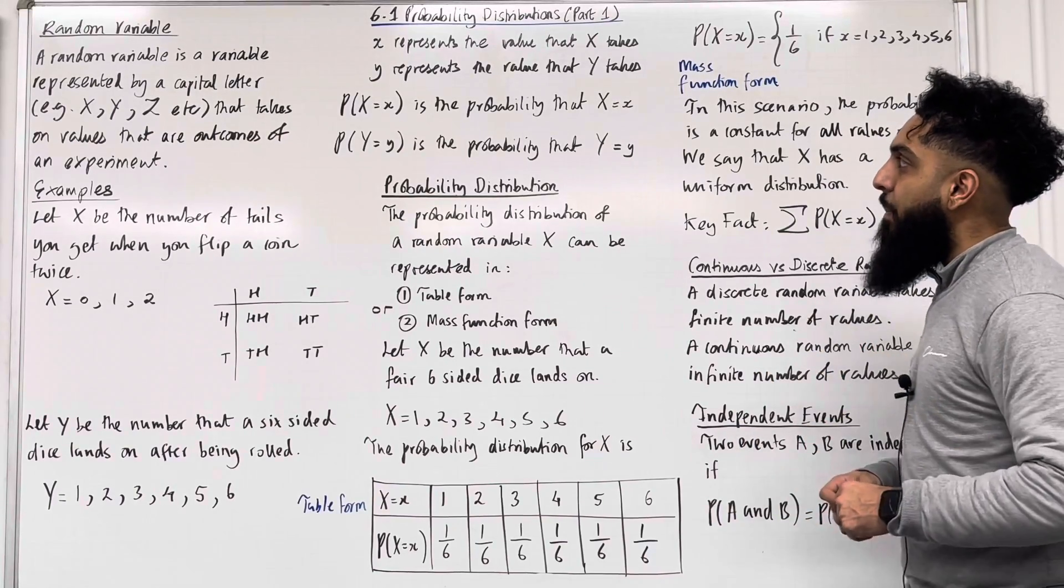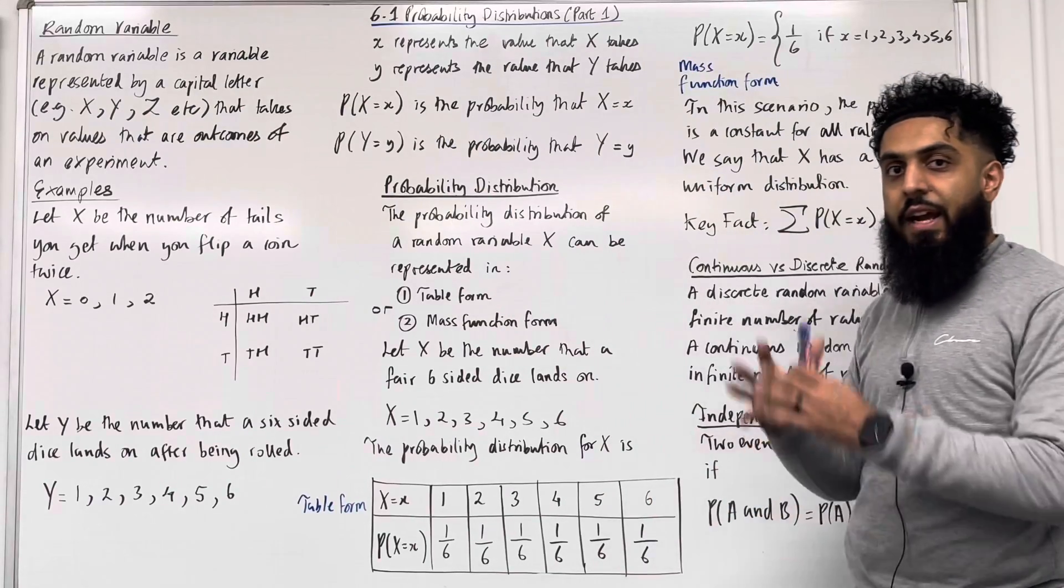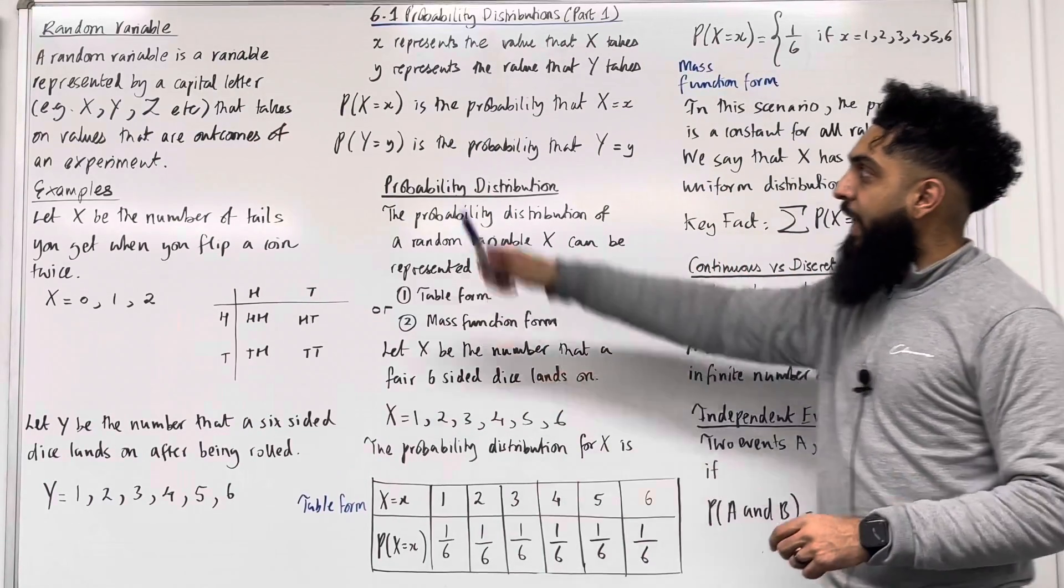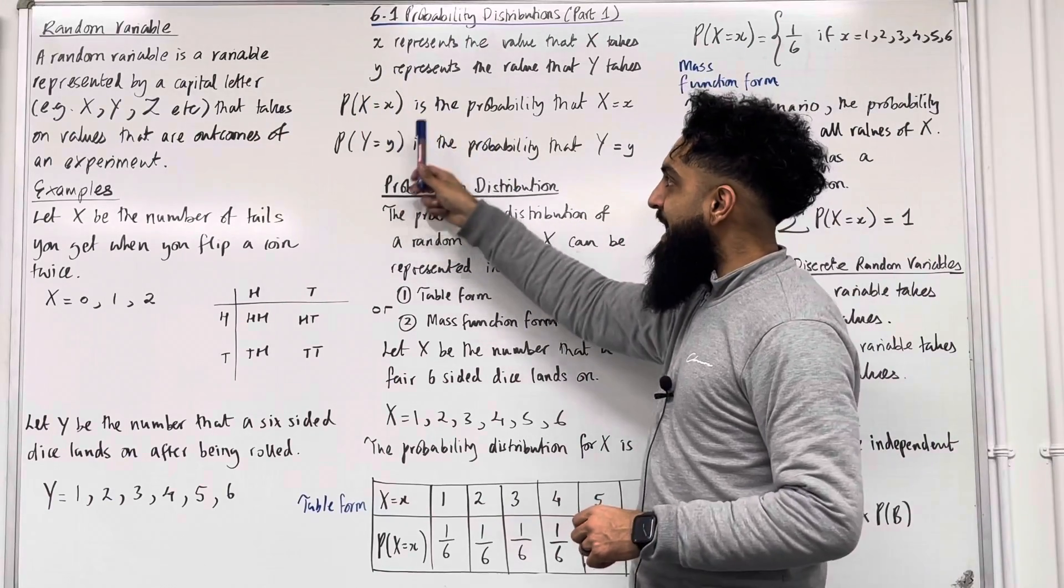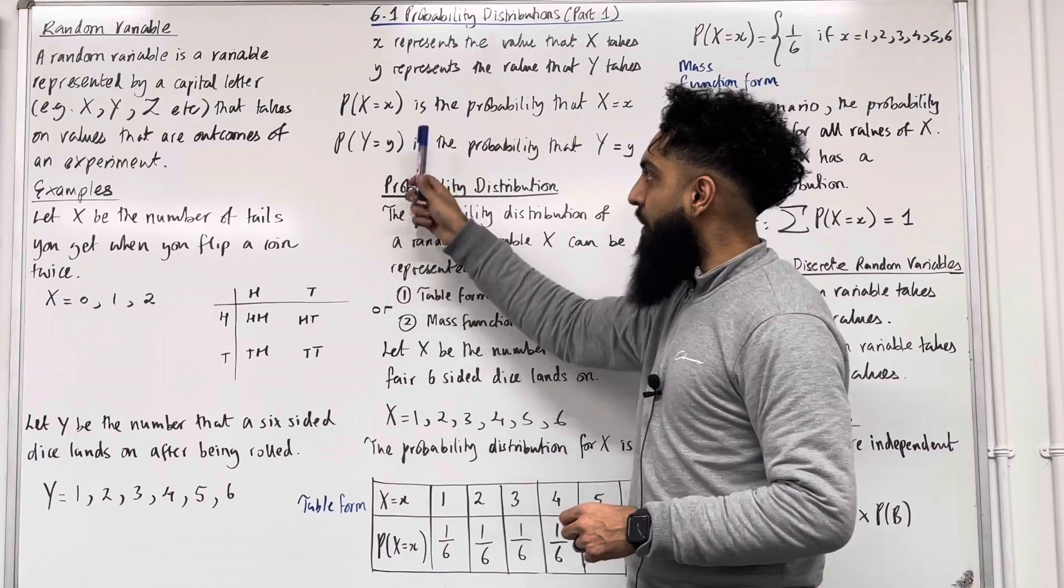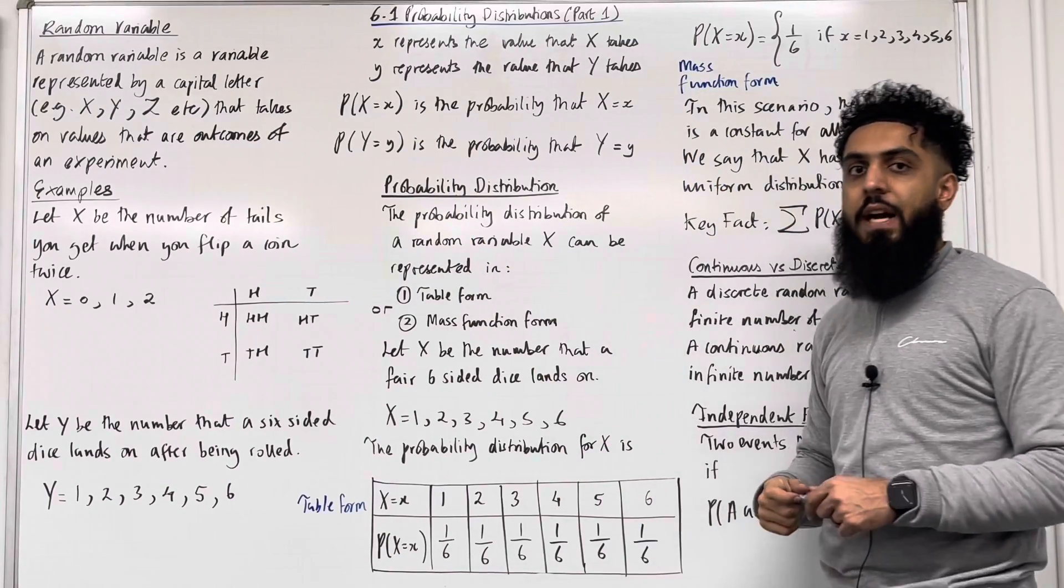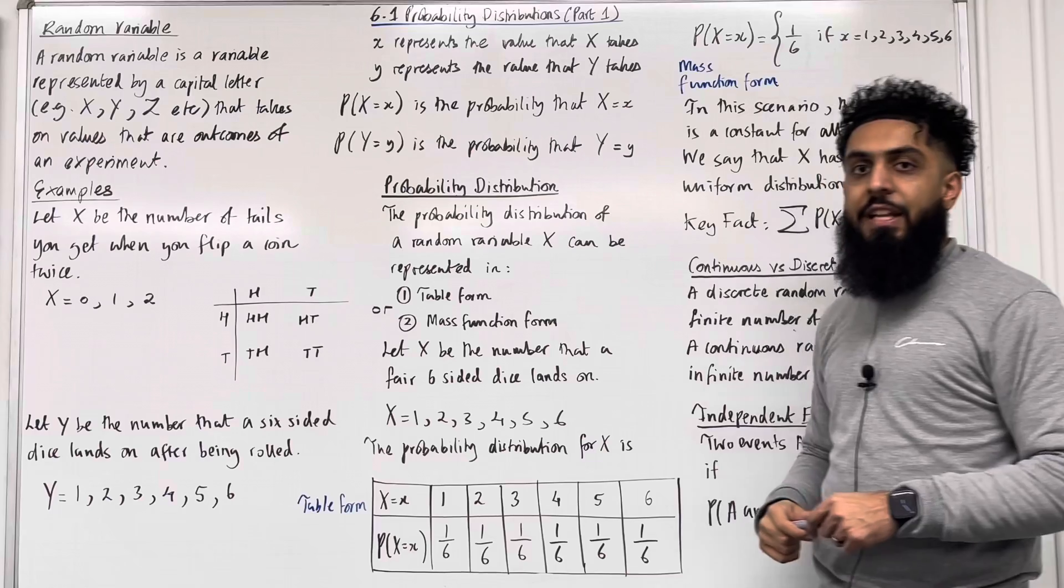Let's focus on some important notations. The lowercase x represents the value that capital X takes. The lowercase y represents the value that capital Y takes. This reads as probability that capital X takes on the value lowercase x. And this reads as the probability that capital Y takes on the value lowercase y. Now let's focus on probability distribution.